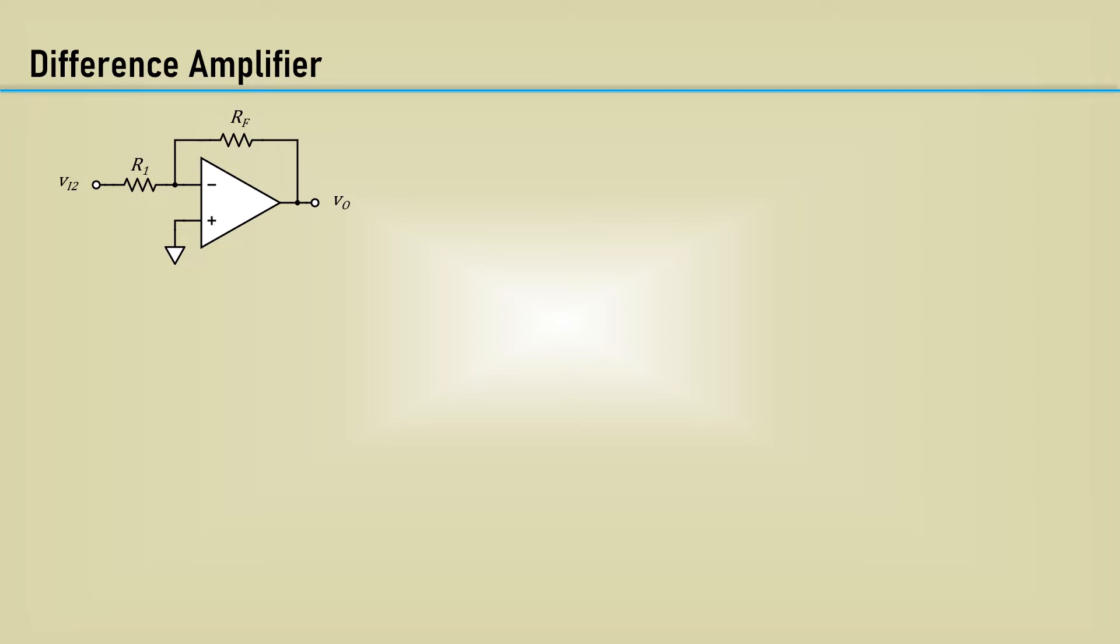Let's start this one with the difference amplifier. Here's the non-inverting amplifier configuration we looked at in Part 1. The op-amp is indeed a differential amplifier, so all we need to do is remove the ground on the non-inverting input and put voltage there at VI1. Well, that does work, but there's a slight problem.